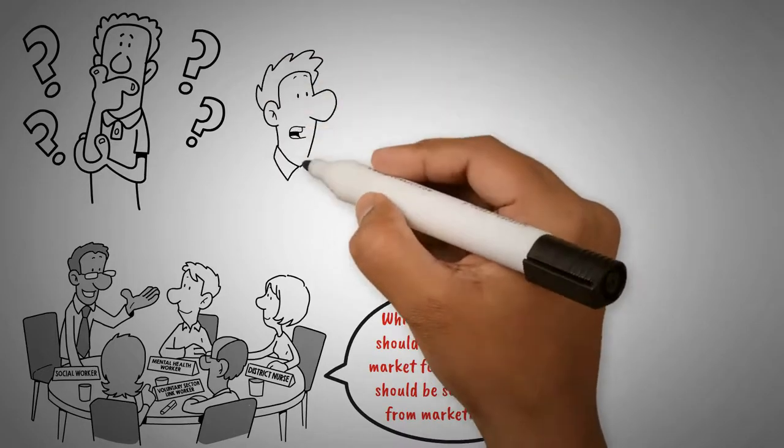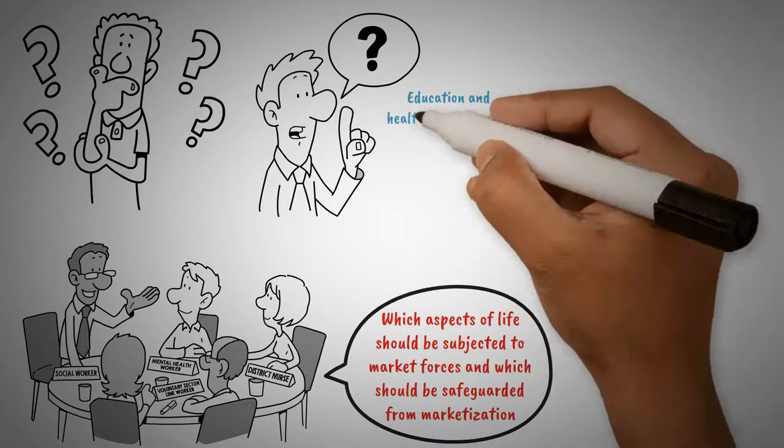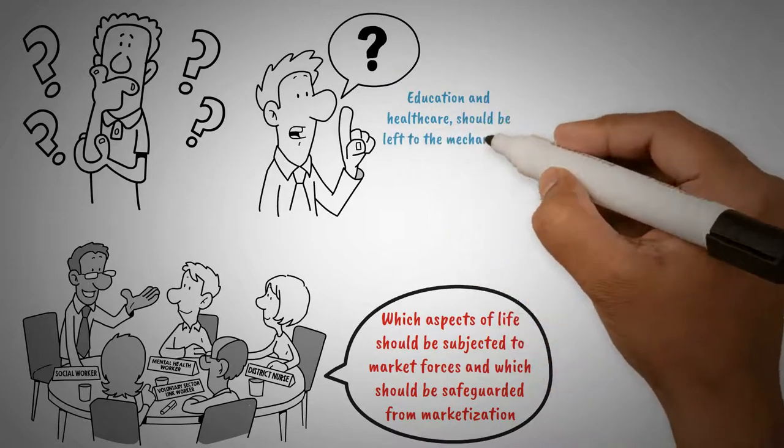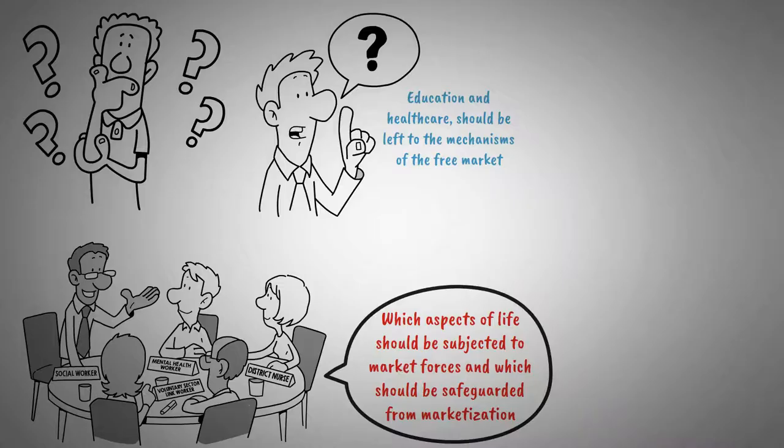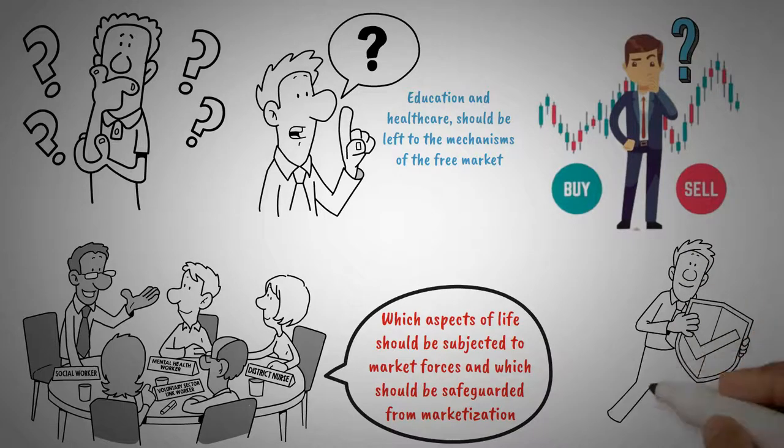One of the central questions Sandel raises is whether social goods, such as education and health care, should be left to the mechanisms of the free market. He questions whether these essential aspects of human well-being should be treated as commodities, bought and sold based on supply and demand, or should they be protected and provided as rights or public goods.